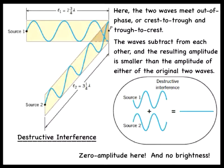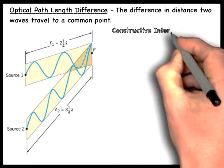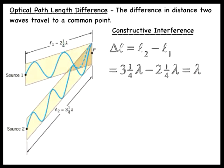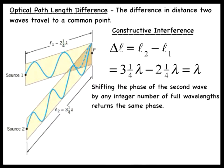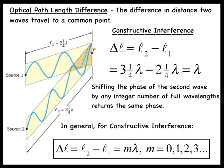In order to understand why we get constructive interference in one case and destructive interference in another, we have to analyze what's called the optical path length difference. This is just the difference in distance the two waves travel from the respective sources to the common point where the interference takes place. In case one, the optical path length difference is delta L equals L2 minus L1, which is equal to the wavelength. Shifting the phase of the second wave by one full wavelength returns the wave exactly to the same phase. In fact, shifting the phase of a wave by any integer number of the wavelength returns the same phase. In general, when the waves start out in phase, constructive interference will result at point P whenever the distances are the same or when they differ by an integer number of wavelengths. In other words, assuming that L2 is the larger distance, whenever L2 minus L1 is equal to m lambda, where m is equal to 0, 1, 2, 3, etc.